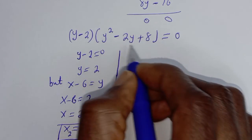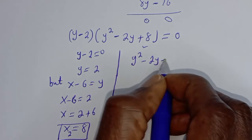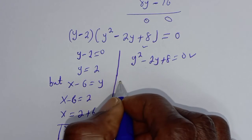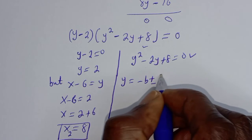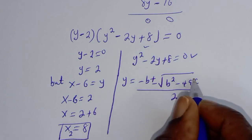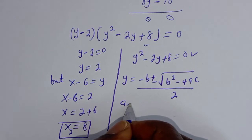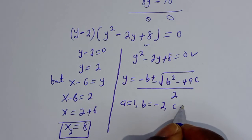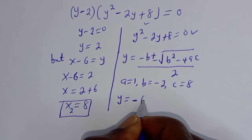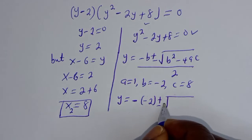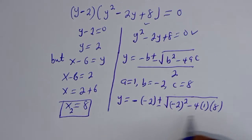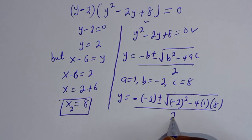Second sub-case: y² minus 2y plus 8 equals 0. Using the quadratic formula y equals negative b plus or minus square root of b² minus 4ac, all over 2a. From this equation a equals 1, b equals minus 2, c equals 8. Substituting: y equals negative (minus 2) plus or minus square root of (minus 2)² minus 4 times 1 times 8, all over 2 times 1.